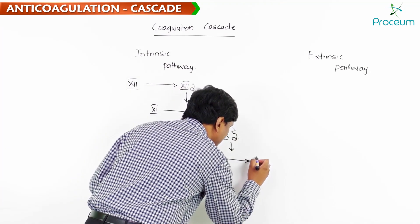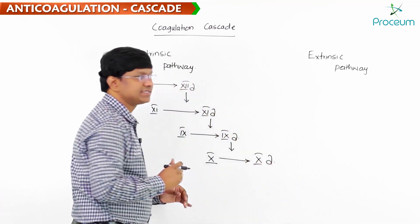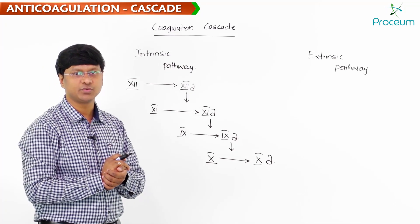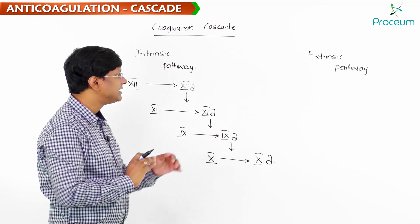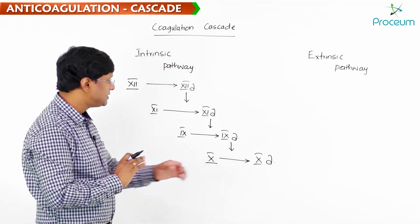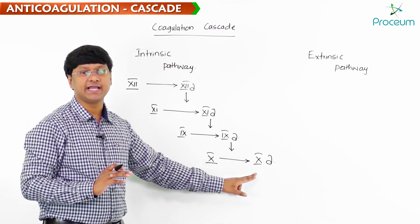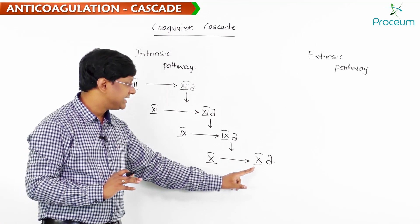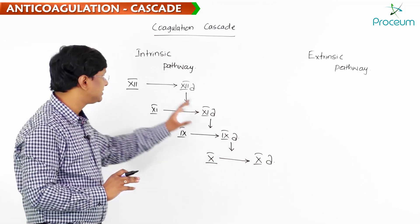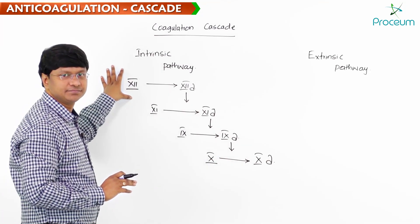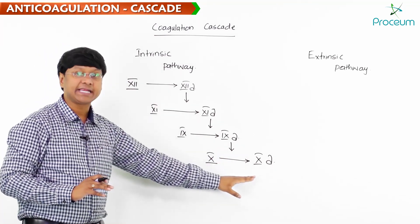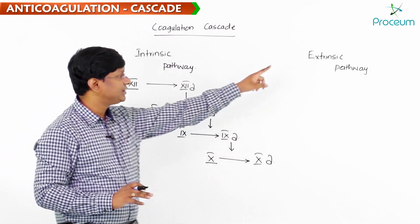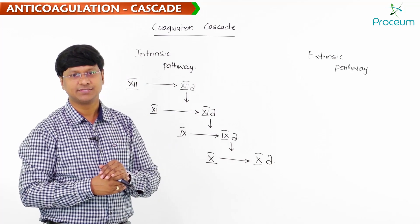Once factor 9A acts on coagulation factor 10, you get what is called the activated form of factor 10, that is 10A. However, this formation of activated factor 10A does not only occur from the intrinsic pathway — the activation of factor 10 can also occur via the extrinsic pathway.